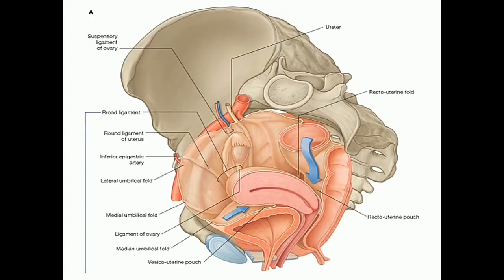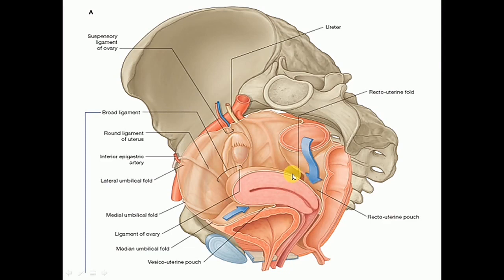The other peritoneal folds include the anterior ligament, that is the utero-vesicle fold of peritoneum, which forms the vesico-uterine pouch, and the posterior ligament, that is the recto-vaginal fold of peritoneum, which forms the recto-uterine pouch.